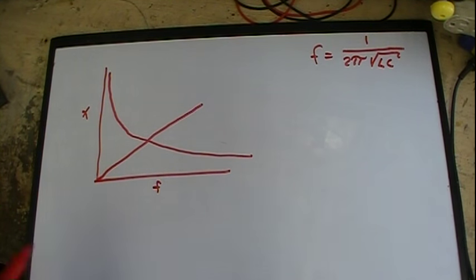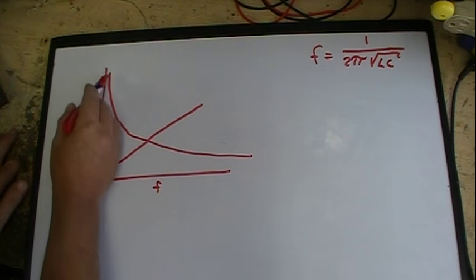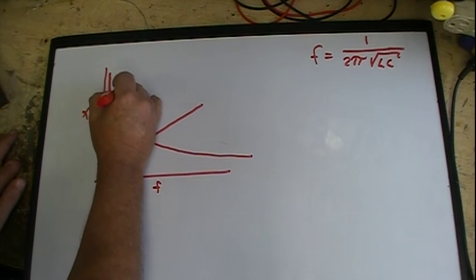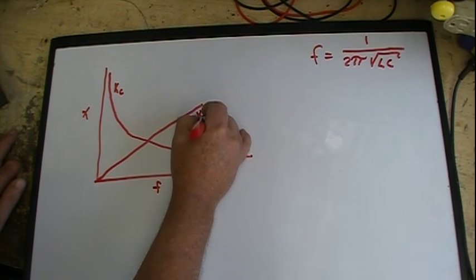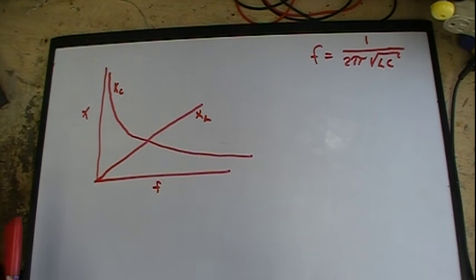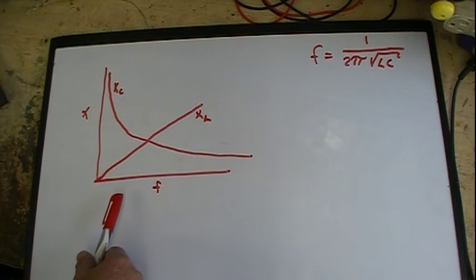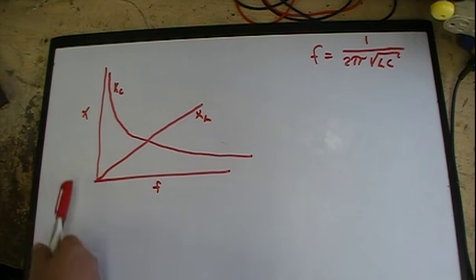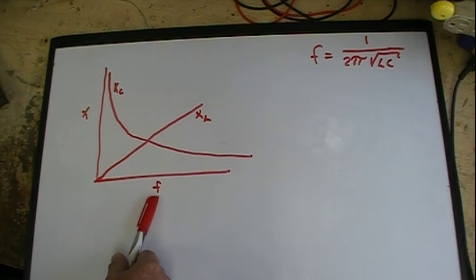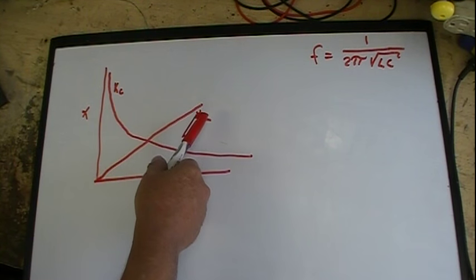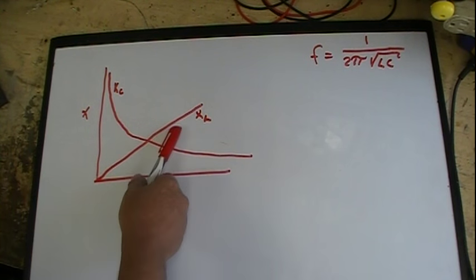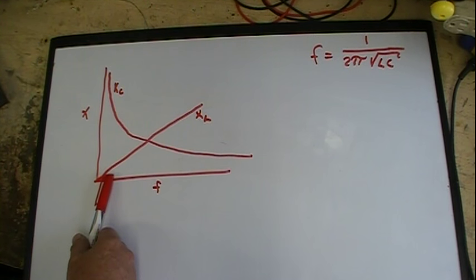This curve represents X sub C, capacitive reactance, and this here is X sub L, inductive reactance. This curve represents X sub C as it changes with frequency. As I increase in frequency, the capacitive reactance reduces. As I decrease in frequency, the capacitive reactance goes up. Inductive reactance has the opposite effect. As I increase in frequency, inductive reactance goes up, and as I reduce frequency, inductive reactance goes down.